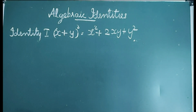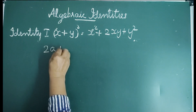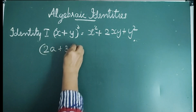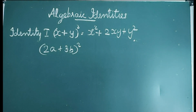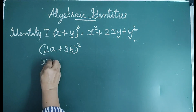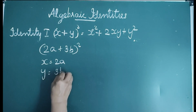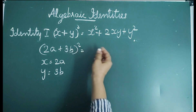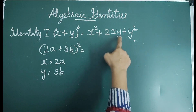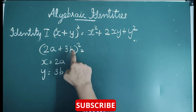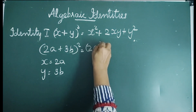Let us consider an example: (2a + 3b)². We know this is in the form of (x + y)², where x = 2a and y = 3b. Then according to the identity, we can write the expanded form as x² + 2xy + y², where x² is (2a)².